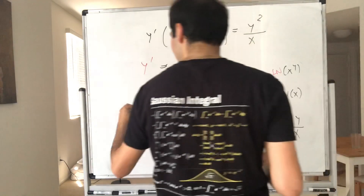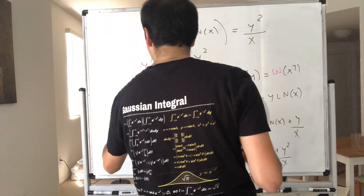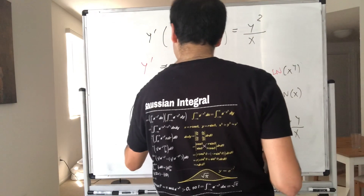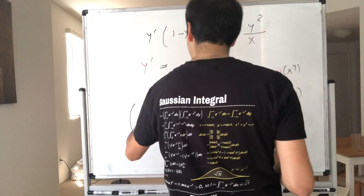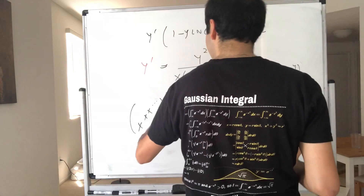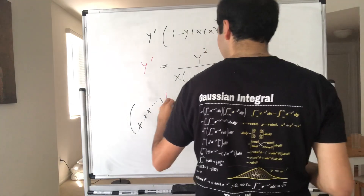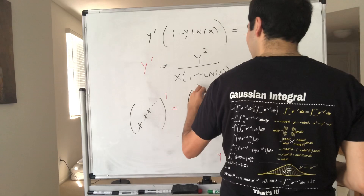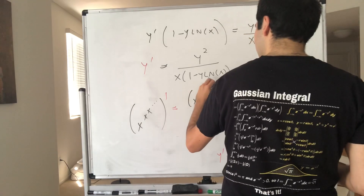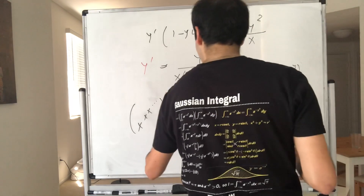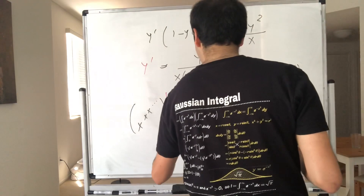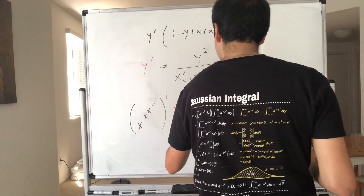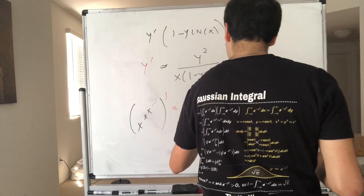So what is the derivative of x to the x to the x to the x? y prime just becomes x to the x to the x to the x, all squared, over x times (1 minus x to the x to the x to the x times ln of x).